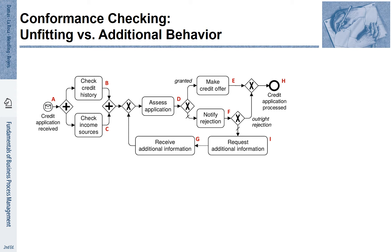In this example, we want to briefly describe the overall idea. As an example, we use a process for a credit application. The process starts with the event 'credit application received.' The letter A indicates an abbreviation referring to this event. Then there is an AND split. Activities 'Check Credit History' and 'Check Income Sources' have to be conducted. The letters B and C refer to these two activities.